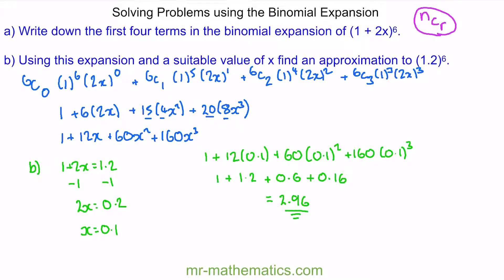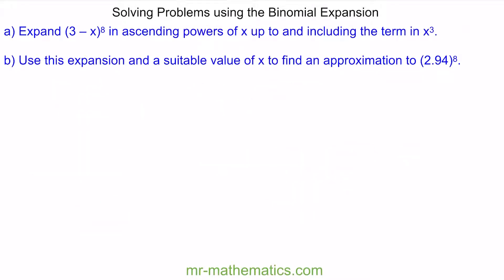Let's move on to our next question. We've been asked to expand 3 minus x to the power of 8 in ascending powers of x up to and including the term in x cubed. Before we expand, we need to remember that the binomial expansion works when written in the form 1 plus x all to the n. This is not in that form because of the 3, so we need to factor out the 3 to make that bracket start with 1. Factorising with 3, this becomes 3 times 1 minus x over 3, all to the power of 8.